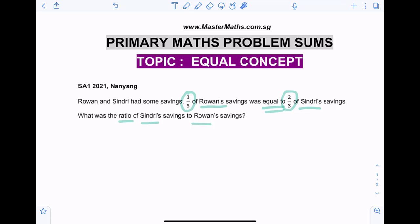So this is an equal concept question where we have to ensure that this part here is equal to this part. Why? Because the question states so. These keywords are there. So ensure that three and two are indeed equal to each other.